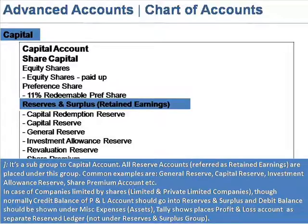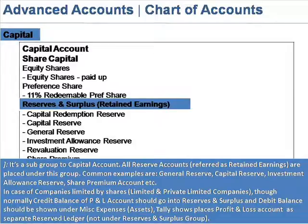In the case of companies limited by shares — limited and private limited companies — though normally the credit balance of the P&L account should go into reserves and surplus and the debit balance should be shown under miscellaneous expenses and assets, Tally places the profit and loss account separately, with the visible amount of reserves stored as separate reserve ledgers, not under the reserves and surplus group.